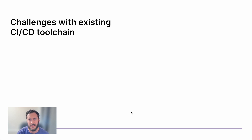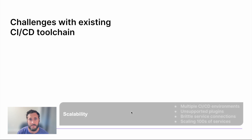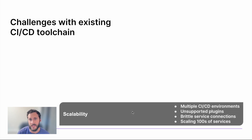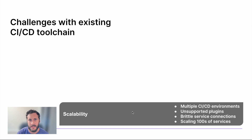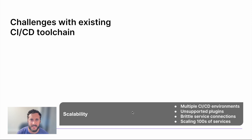Let's dig a little deeper into some of these challenges that we see out in the field. First up, scalability. This is one that is common among platform teams, ensuring that the systems they build can help scale out to the next 100 developers or services. Some of these challenges may be maintaining a long list of build agents that have complicated installs or are brittle to the touch.